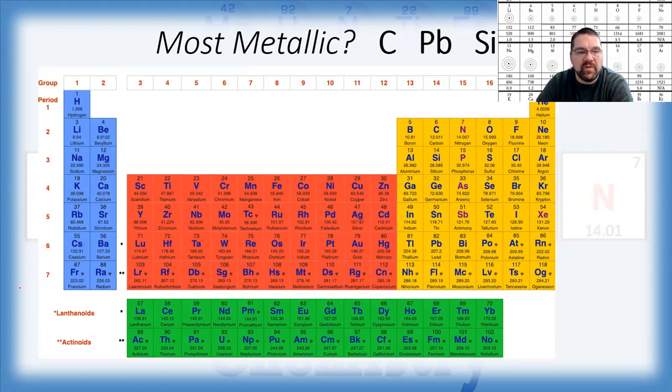Most metallic. Remember your most metallic elements are in the lower left corner. When we compare carbon to lead to silicon, they're all in the same column, so there's no left-right trend to deal with. It's just the vertical trend. The further down we go, the more metallic your element is. That is because the further down you are, the greater the distance, and therefore the weaker the attractive forces holding the electrons.